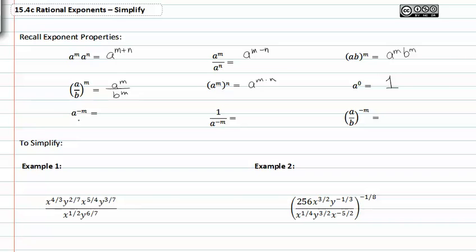When you have a negative exponent, you simply flip it to the other side of the fraction bar and change the sign of the exponent. This is true for if they're in the denominator as well — you can simply bring it to the numerator and change the sign.